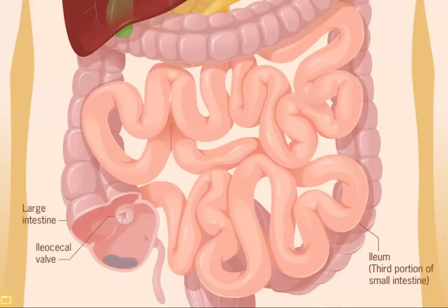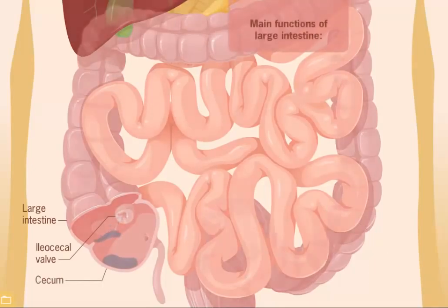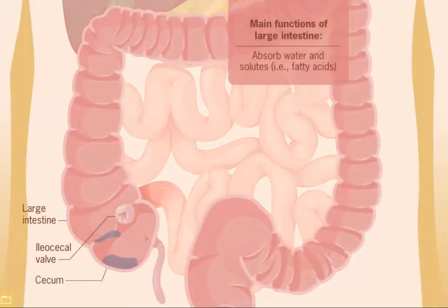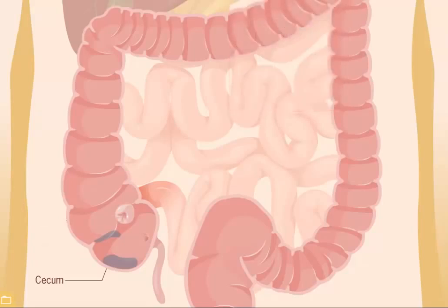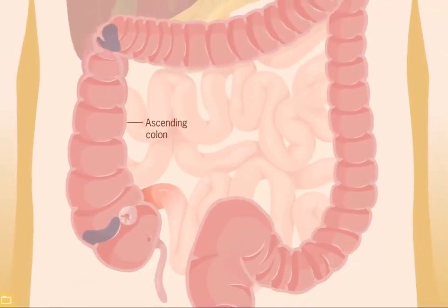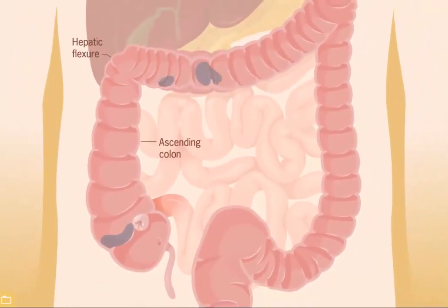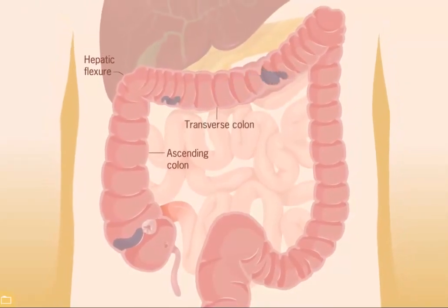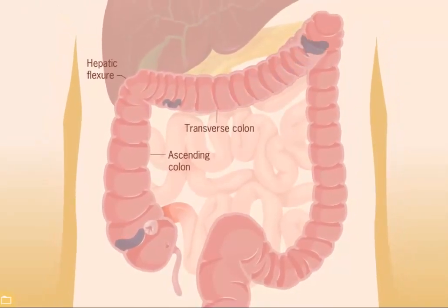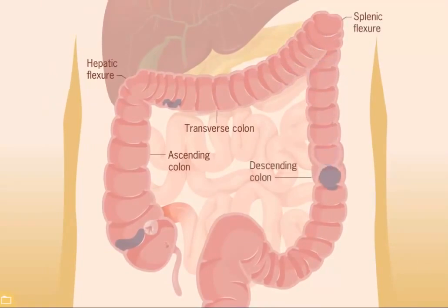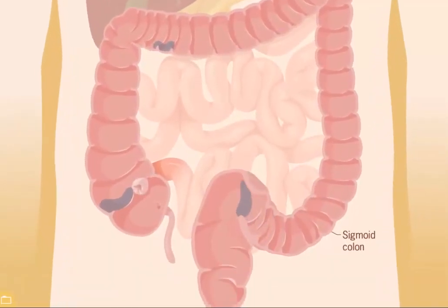The unabsorbed portion of the bolus passes out of the ileum and into the large intestine through the ileocecal valve. The first portion of the large intestine is called the cecum. The main function of the large intestine is to absorb water and solutes, such as fatty acids, which help concentrate and form the stool. The bolus is pushed by a peristaltic wave up and through the ascending colon, which passes through the first major bend, the hepatic flexure. The bolus is then pushed through the transverse colon and travels through the second major bend, the splenic flexure.